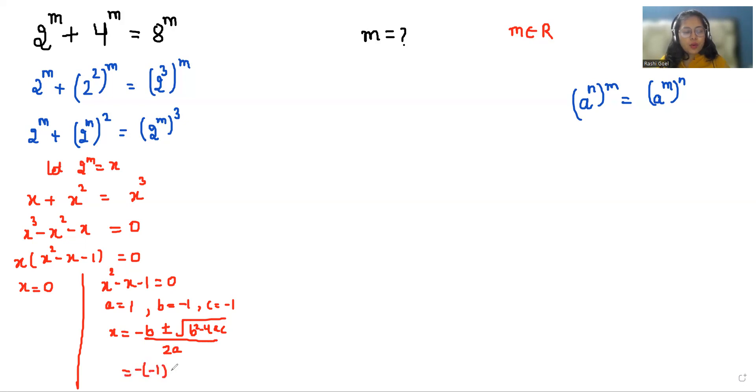So -(-1) ± √((-1)² - 4(1)(-1)) / 2(1) = (1 ± √(1 + 4)) / 2 = (1 ± √5) / 2. So we have 2 roots: either (1 + √5)/2 or (1 - √5)/2.